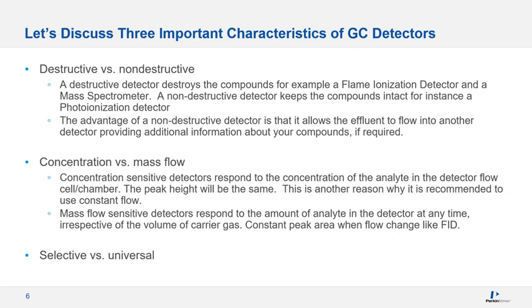Other detectors like FID or NPD are sensitive to mass flow change of elements in the carrier gas stream, and the response of such detectors remains unaffected by dilution with makeup gas or flow rate changes. Finally, a selective detector responds to a specific component or class of components. For example, TCD or thermal conductivity detector is a universal detector, meaning it responds to almost any element except the carrier gas itself. We will show examples of both selective and universal detectors in the next slides.